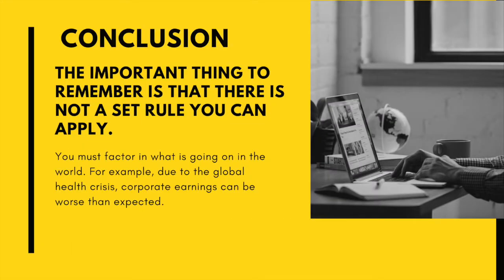The important thing to remember is that there is not a set rule you can apply — you must also factor in what is going on in the world. For example, if the economy is in trouble or there is a global health crisis, corporate earnings can be worse than expected. This lowers investor expectations and the stock market price will go down, affecting the PE ratio. Even if the market seems fairly valued at a PE ratio of 14, bad times could cause the market to continue on a downward spiral with the PE ratio going much lower.